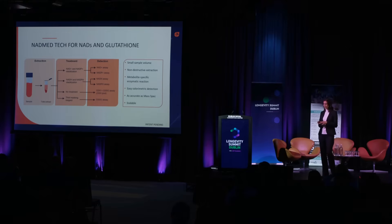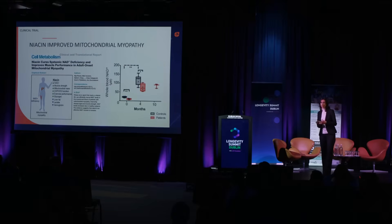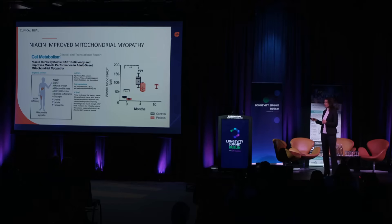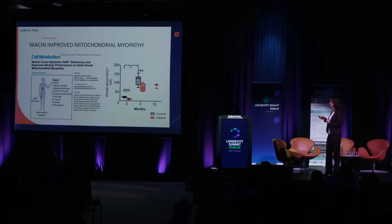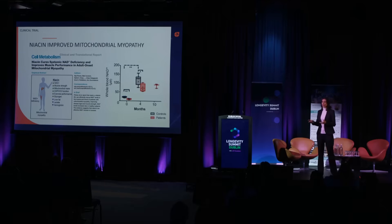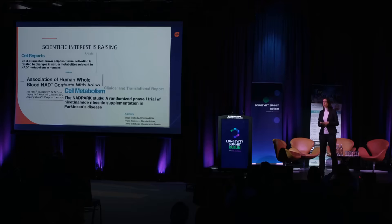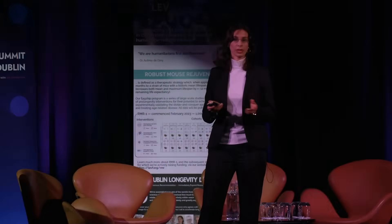Using this technology, we proceeded with a clinical trial involving six mitochondrial myopathy patients. We established from the start that their blood NAD levels were definitively lower than in controls. After six weeks of intervention with niacin, their NAD levels increased and stayed high throughout. We also showed that muscle NAD levels increased, and the patients did really well afterwards.